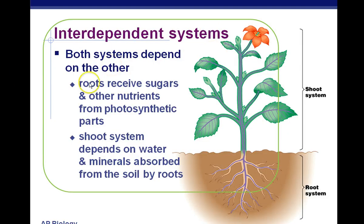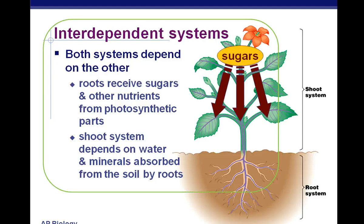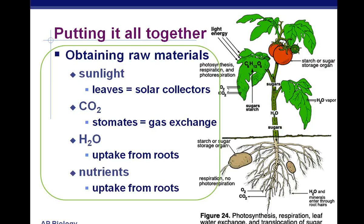These systems are interdependent — they rely on each other. The roots receive sugars from the leaves and store them until needed. The shoot system depends on water brought up to the leaves in order to do photosynthesis, since photosynthesis needs a supply of electrons coming from water brought up from the ground. Most plants have a vascular system — pteridophytes, angiosperms, and gymnosperms all have tubes. Obtaining raw materials from the external environment: sunlight collected by leaves, carbon dioxide coming in through stomates, and water and nutrients from the roots. This ends part one of Chapter 35.